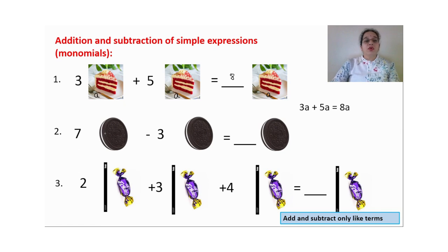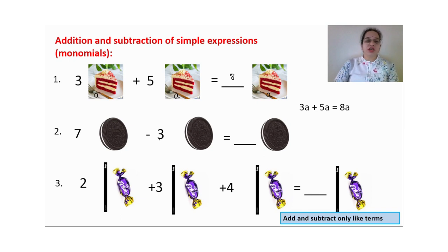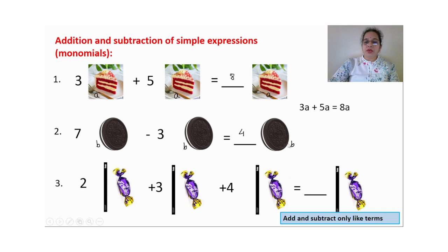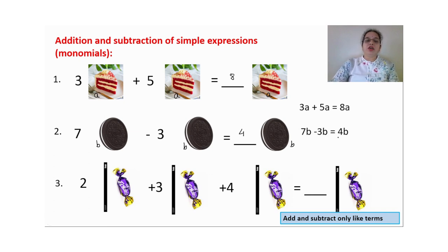Next: Oreo biscuits — another favourite. I have 7 Oreo biscuits, but my friend came and I gave her 3, so 7 minus 3 gives 4 Oreo biscuits. Now if I replace 'Oreo biscuits' with variable B, then 7B minus 3B equals 4B.